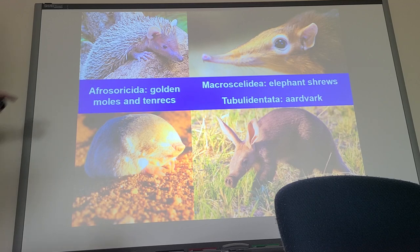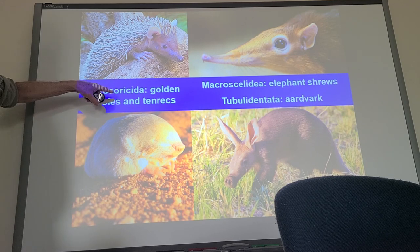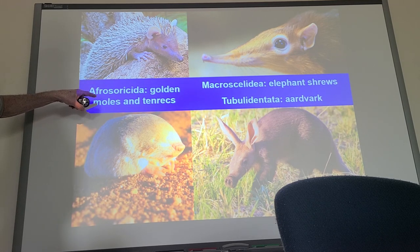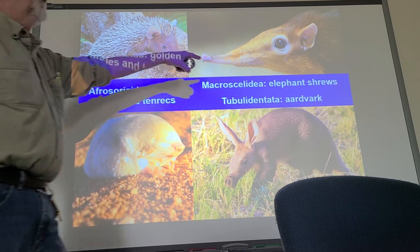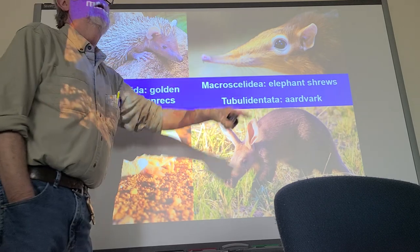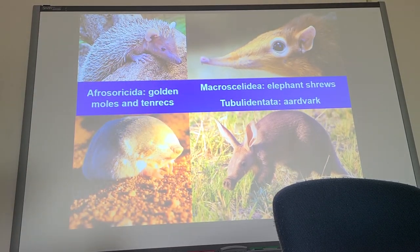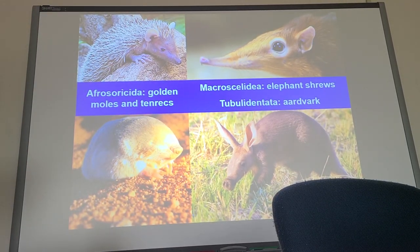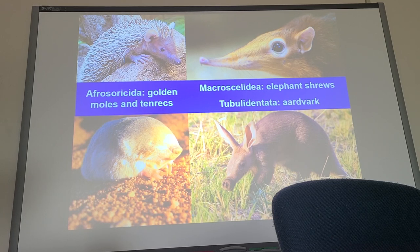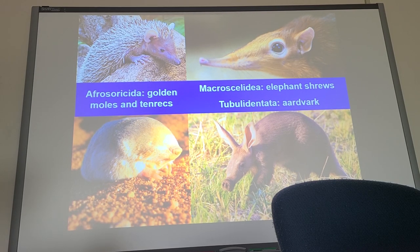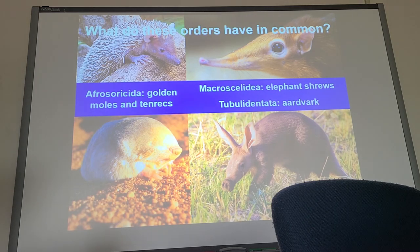Notice that golden moles is plural, tenrec is plural, and elephant shrews is plural, but aardvark is not plural. There's only one species — not one individual animal, but only one species in that entire order.